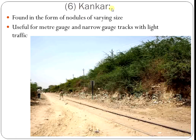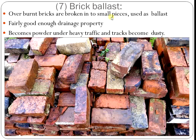The sixth type is conker, which is found in the form of nodules of varying size. It is useful for meter gauge and narrow gauge tracks with light traffic — that is, where the volume of train traffic is very less. The seventh type is brick ballast, where overburnt bricks are broken into small pieces and used as ballast. It has fairly good drainage property but becomes powder under heavy traffic, making the track dusty.